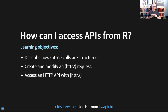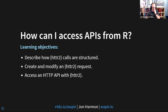I focus exclusively on HTTR2 in the book. If you are working with APIs, even if you're used to working with HTTR, I recommend HTTR2. It has a lot more safety built in, a lot more features, and it's easier to extend for special things. I will eventually add a footnote or paragraph about the original HTTR.